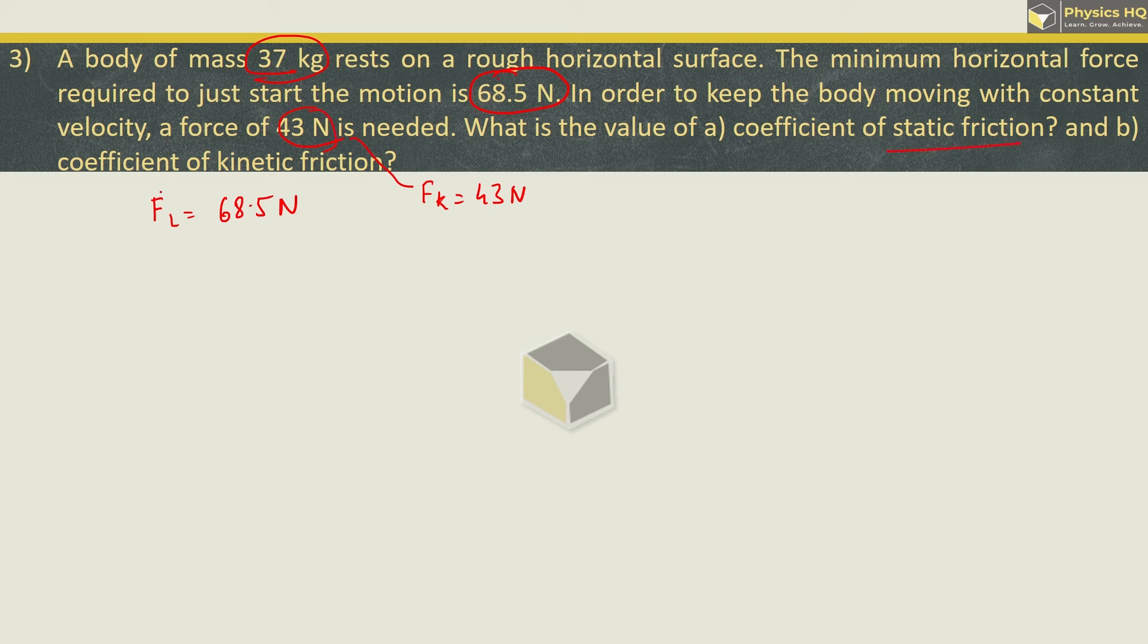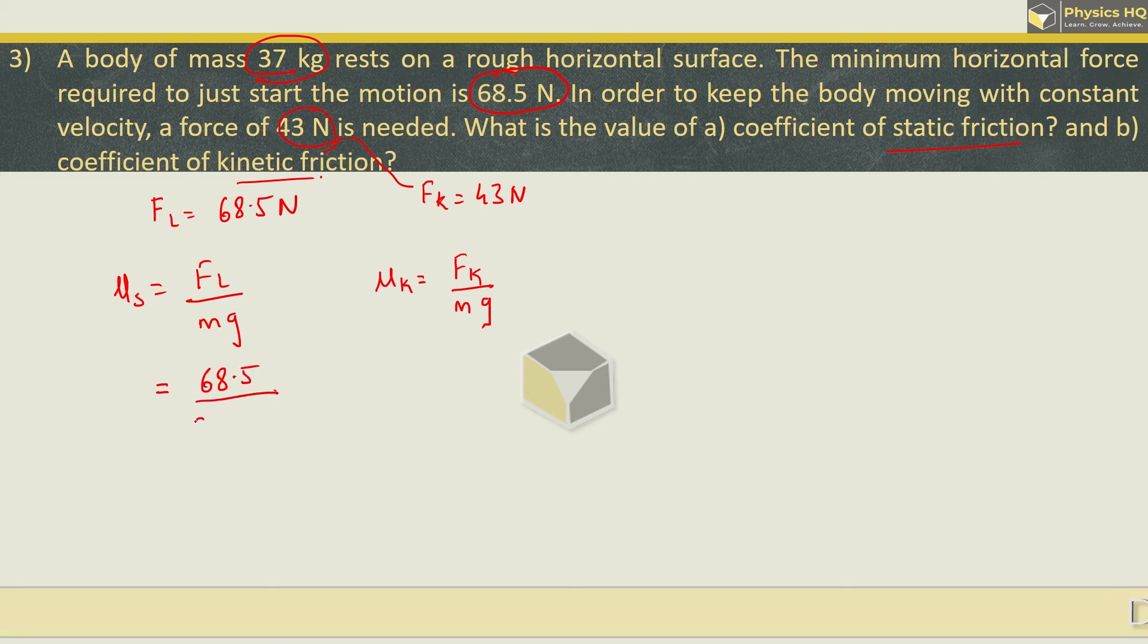We are supposed to find coefficient of static friction and coefficient of kinetic friction. Coefficient of static friction will be limiting force upon N which is nothing but M into G. Likewise, coefficient of kinetic friction will be force of kinetic friction upon N which is again M into G. Putting the values, limiting force is given as 68.5.